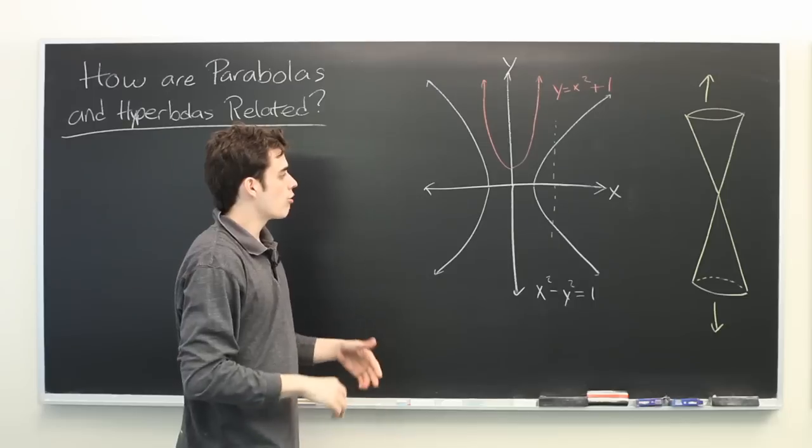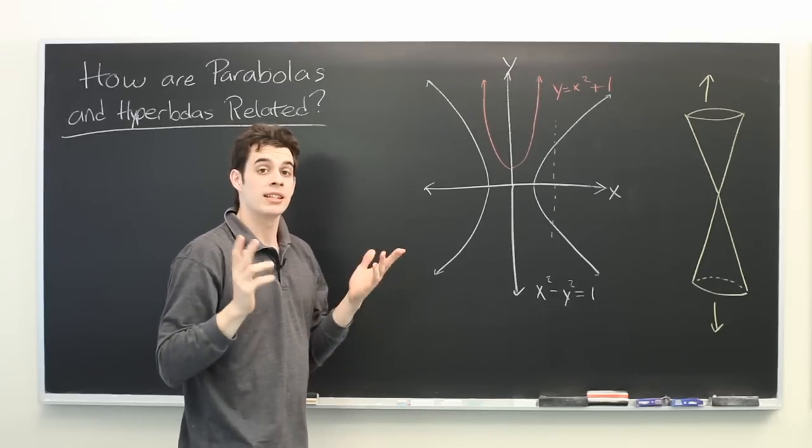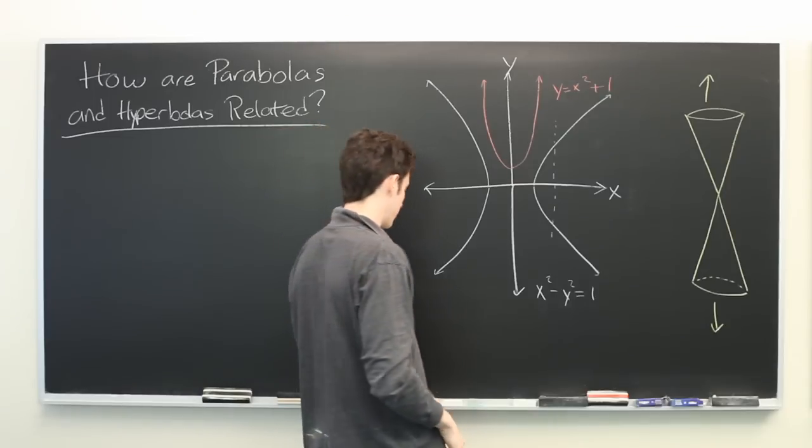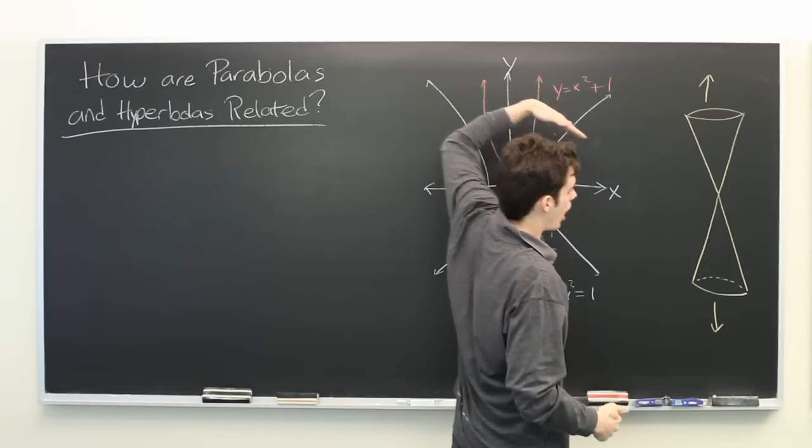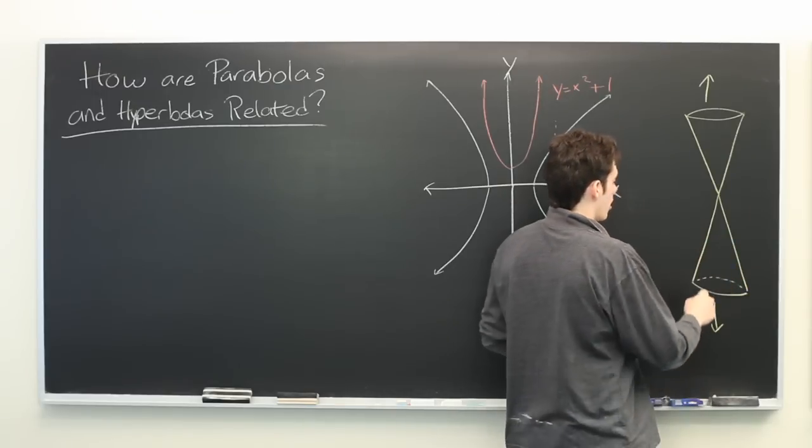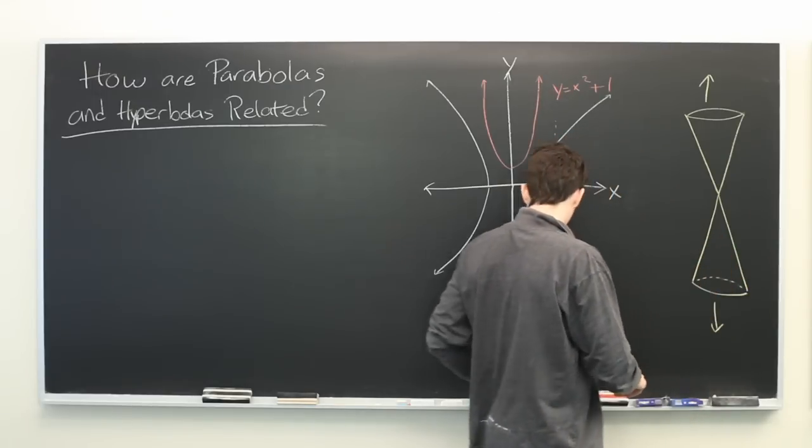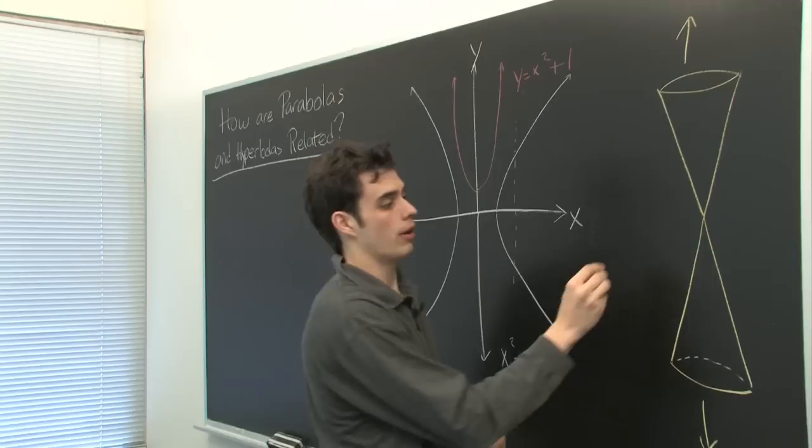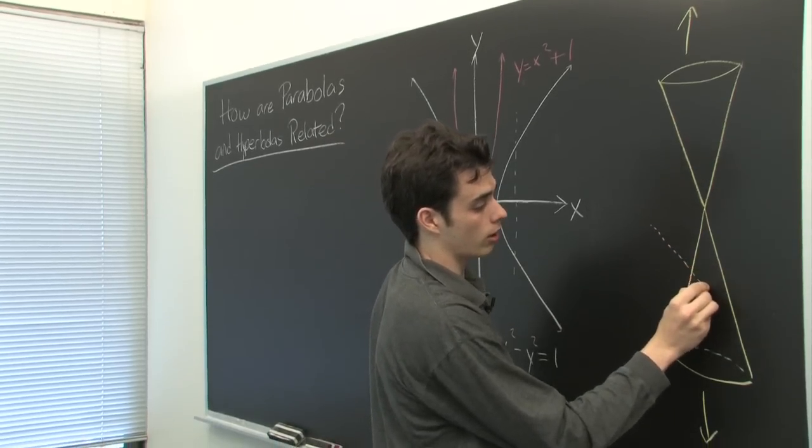You can create a few different shapes by taking sections of the cone. If you imagine chopping the cone into two parts using a plane, the set of points that the plane intersects with the cone will create a conic section.